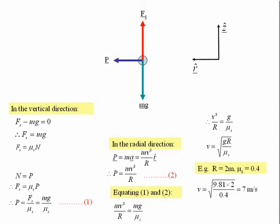If we put some numbers in, say the radius of our rotor is 2 metres and the coefficient of static friction is 0.4, that will give us a velocity of 7 metres per second and an angular speed of 3.5 radians per second.